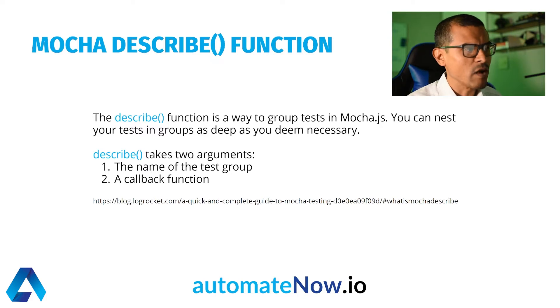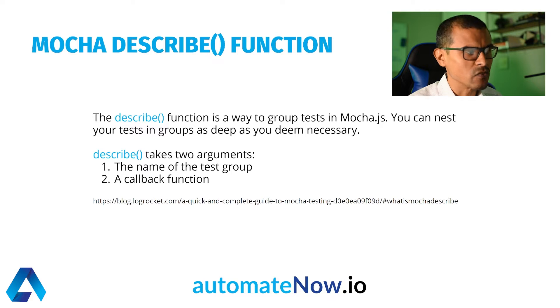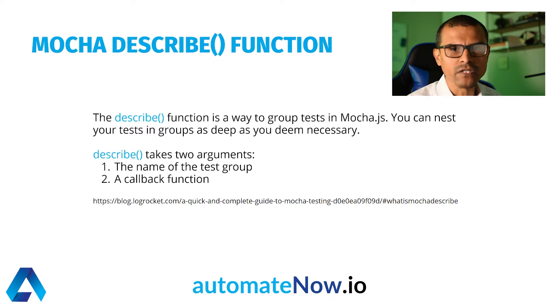We see here that the describe function takes in two arguments: one being the name of the test group, and the other one being a callback function. Let's have a look at the next slide so we can see how we can build a test suite using the describe function.